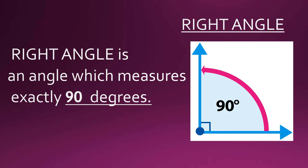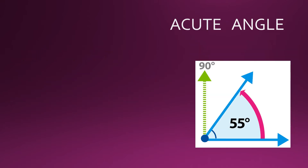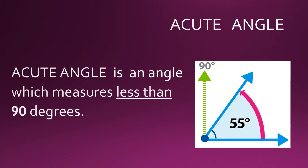In this figure alongside, you can see the angle measures 90 degrees — this is how a right angle looks. Now, what is an acute angle? An acute angle is an angle which measures less than 90 degrees.